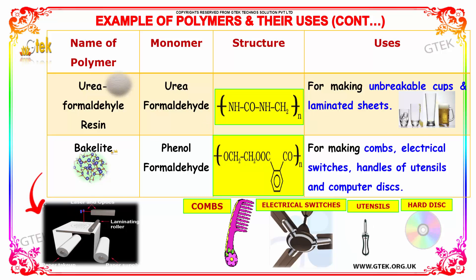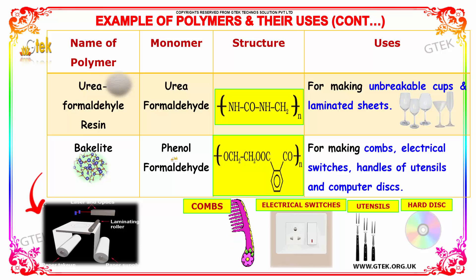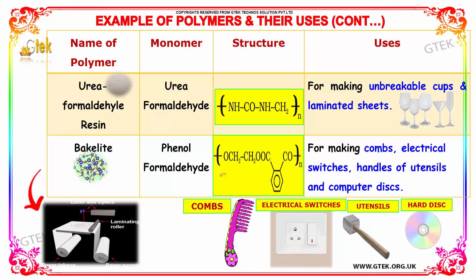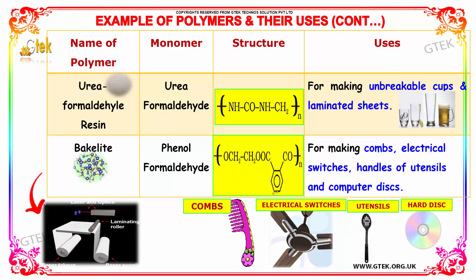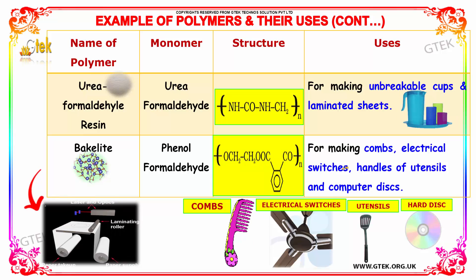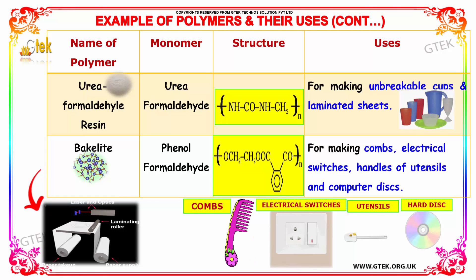Another polymer is bakelite, whose monomer is phenol formaldehyde, with structure as follows. Bakelite is used for making combs, electrical switches, handles of utensils, and computer disks.